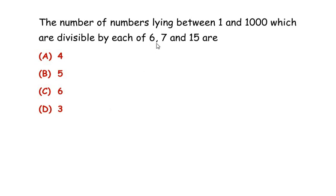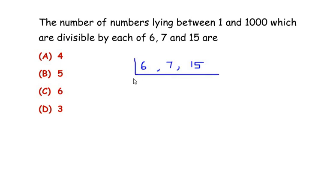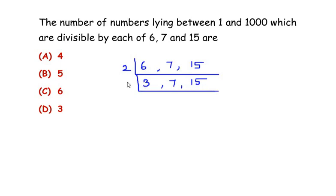To solve this, let us find out the lowest common multiple of six, seven, and fifteen. I am going to use the method of prime factorization. Let me write six, seven, and fifteen, and divide these numbers by prime numbers only. Starting with the table of two — three and fifteen do not go in the table of two, so let's move to the next prime.